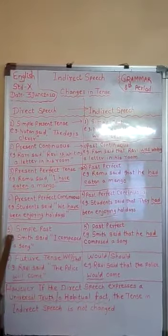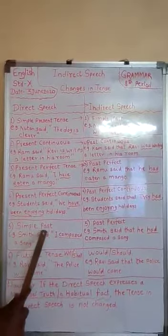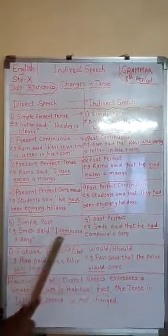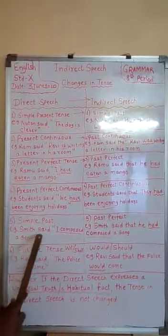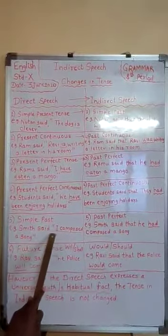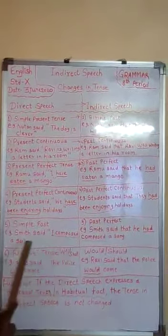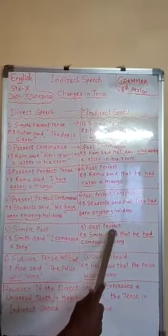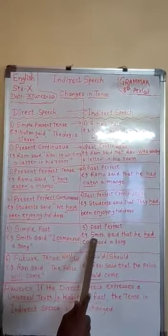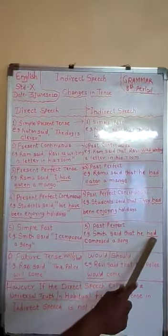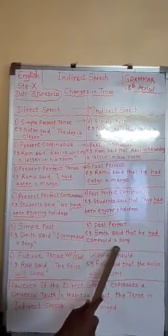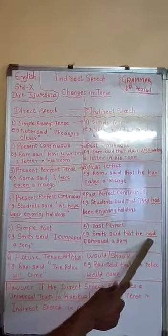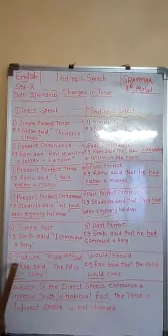The fifth tense: simple past tense changes into past perfect tense. For example: Smith said, 'I composed a song.' This changes into past perfect: Smith said that he had composed a song. 'Had' indicates past perfect tense — this is the change from simple past to past perfect tense.